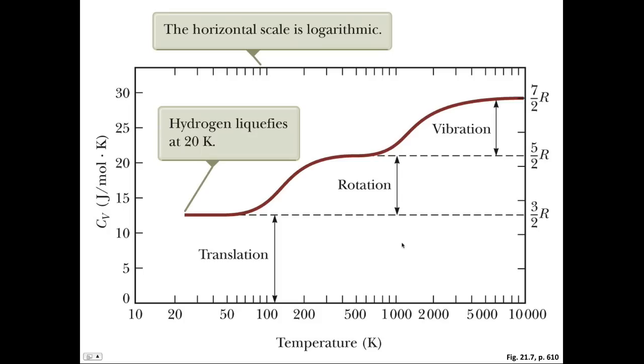Now, this is an interesting graph. It shows us for hydrogen gas, H2, how the Cv varies as the temperature varies. So you can see at low temperatures, below around about 100 Kelvins, the Cv is equal to 3 over 2R. That's due to the 3 degrees of freedom.